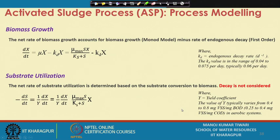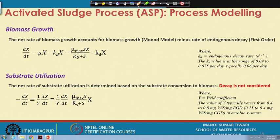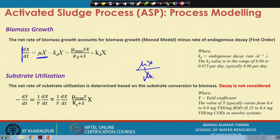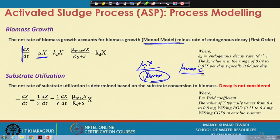The rate of biomass growth, dX/dt, accounts for the growth of biomass: μ times X. As discussed, when growth is exponential, μ equals μmax. But in most conditions it is not exponential and we use Monod kinetics, so μ becomes μmax × S / (Ks + S).